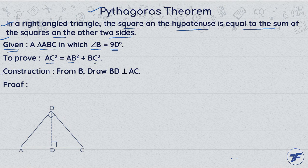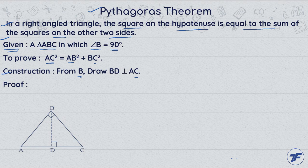Construction is done. From point B, we draw a perpendicular BD on AC. You have already been told that construction plays an important role for any theorem.